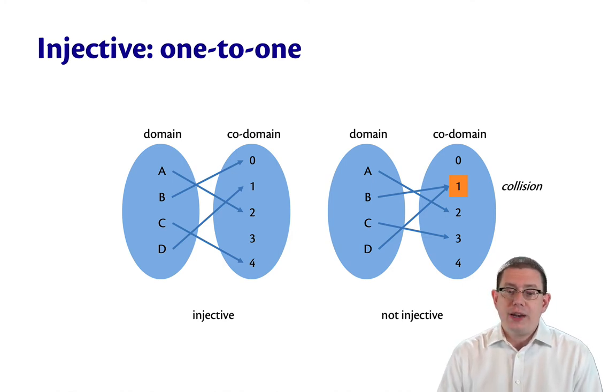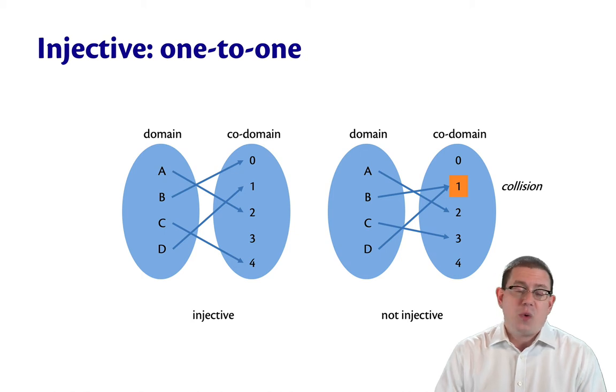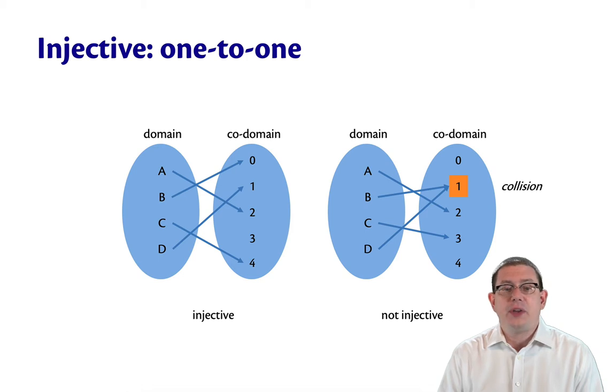The function on the right, if we know the output is one, we don't know whether the input was B or D. On the other hand, the function on the left, if we know the output is one, then we know it had to have been D.